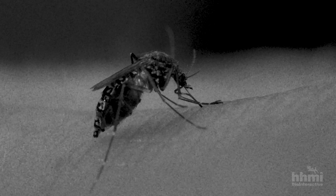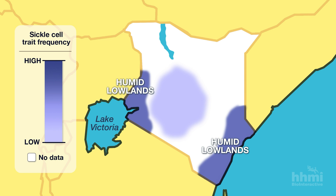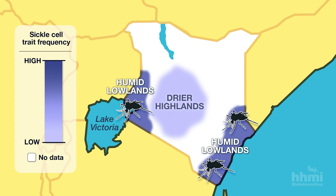Allison had caught malaria, a deadly infectious disease, on a family vacation to the Kenyan coast. He knew very well that the humid lowlands around Lake Victoria are breeding grounds for the Anopheles mosquito, which spreads the malaria parasite. He also knew that these mosquitoes and the malaria they spread are not common in the drier highlands. Could sickle cell and malaria somehow be connected? He predicted that high frequencies of sickle cells would only occur in areas where malaria is endemic.